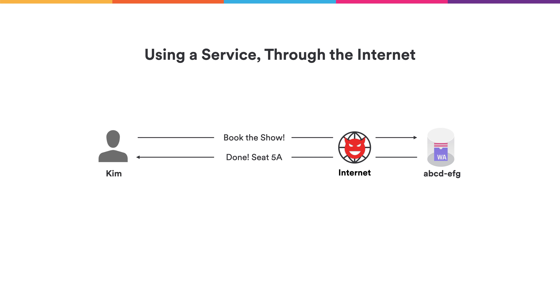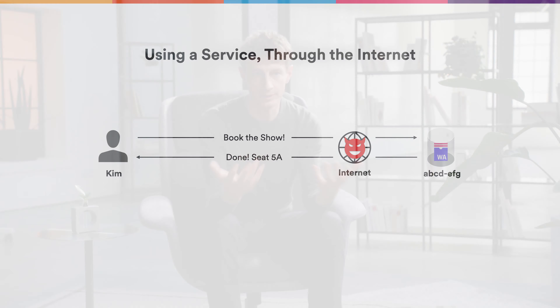Making this more realistic, you're probably talking to a service over the Internet, and the Internet is a big dangerous place full of malicious parties. What if somebody between you and the service wants to mess with the request and response? It could make you believe you got a different seat — embarrassing when you're fighting with somebody else over seat 7D. Or it could pretend you didn't book the ticket so you miss the show but still get charged. Or the other way around — it could pretend you got the ticket when you actually didn't, so you show up and they don't let you in.